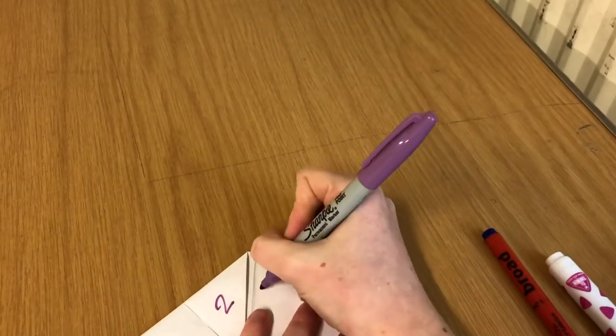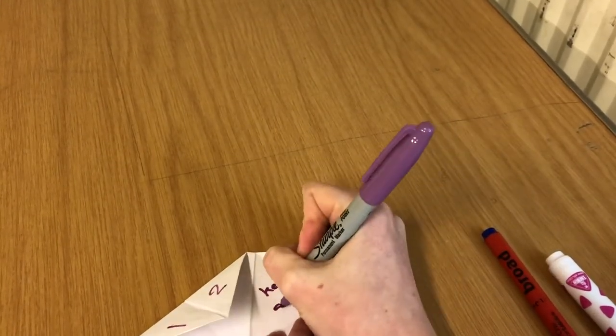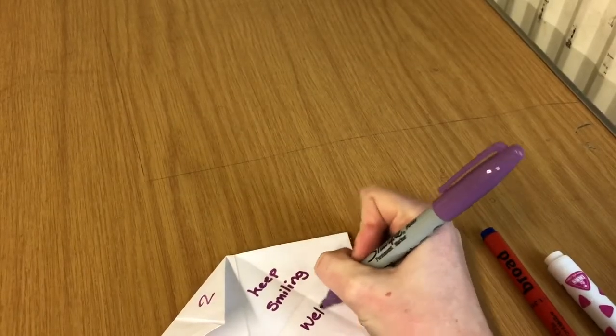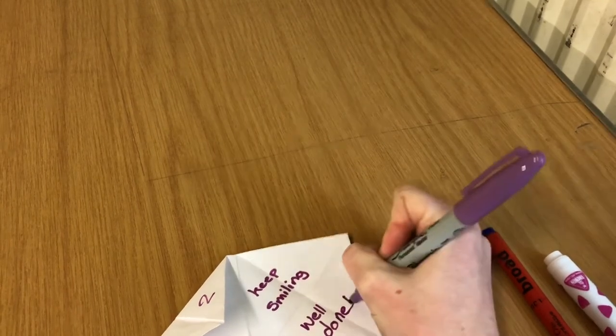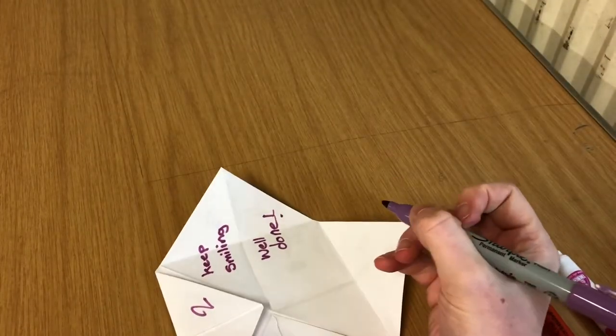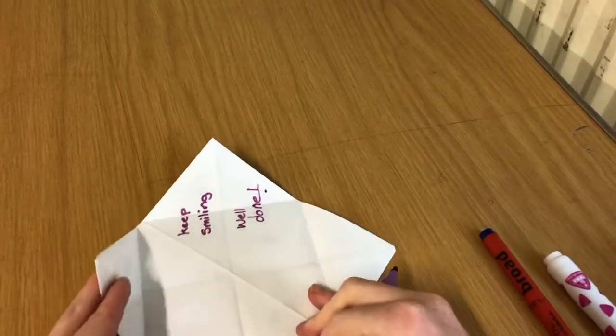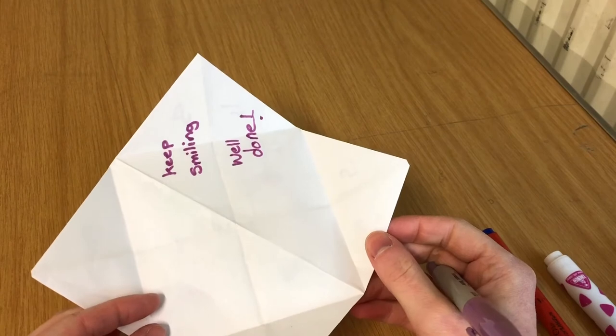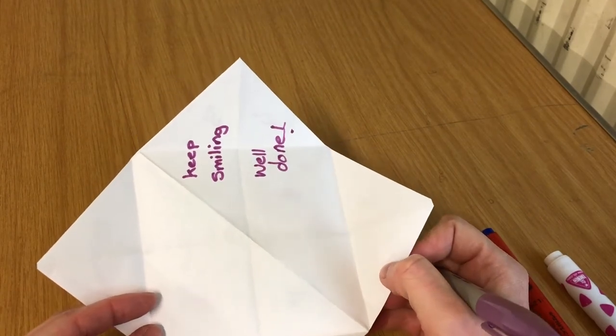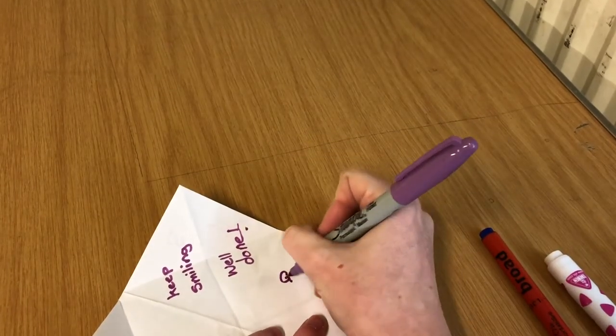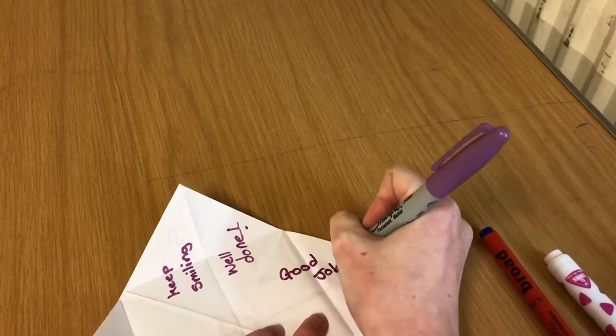And then we can see each flap folds up and we've got a nice line dividing the two sections in half. In there we can write some nice messages to people. So, keep smiling, well done.